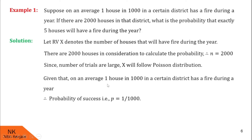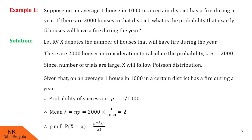Given that on an average, one house in 1000 has a fire during a year, the probability that a house will get a fire during the year — that is, probability of success p — is 1 by 1000. Therefore, mean lambda is given by n into p: n is 2000, p is 1 by 1000, therefore lambda is 2. Now the PMF becomes P(X = x) = e raised to minus 2, multiplied by 2 raised to x, upon x factorial.